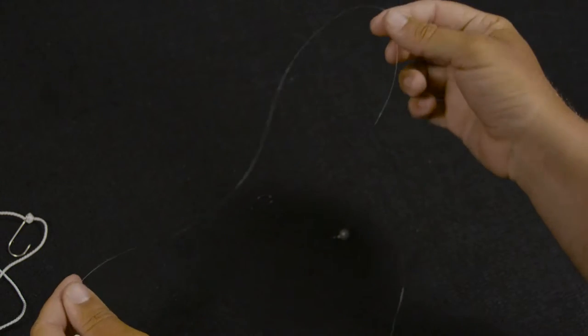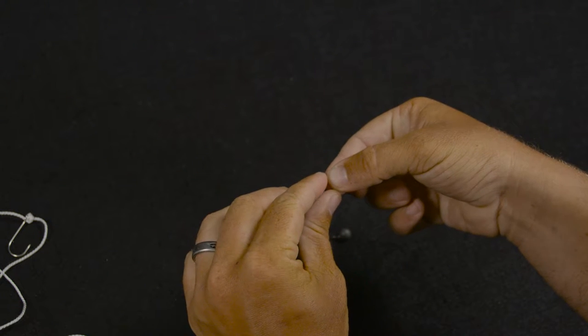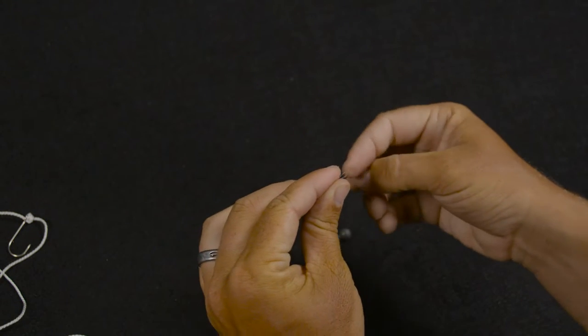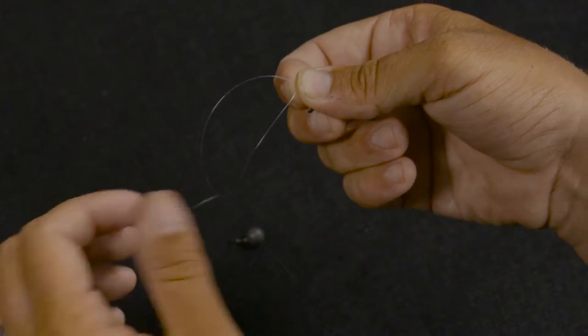But this is eight pound fluorocarbon. I like to use six or eight pound line when I'm tying my drop shot. It's a finesse tactic. It works really well in clear water, but you can fish it in dirty water and with a little heavier line if you want to.